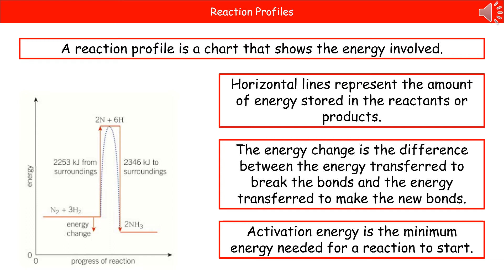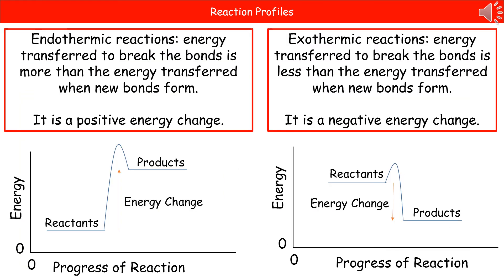The activation energy is the energy needed for the reaction to start. For an endothermic reaction profile, the energy transferred to break the bonds is more than the energy transferred when new bonds form, so it's a positive energy change. For an exothermic reaction, the energy transferred to break the bonds is less than the energy transferred when new bonds form, so it's a negative energy change.